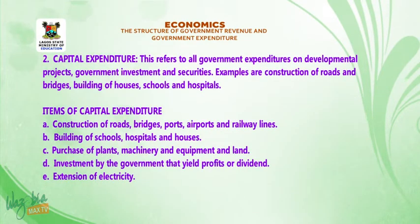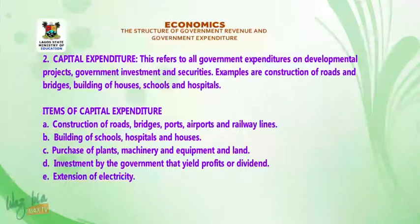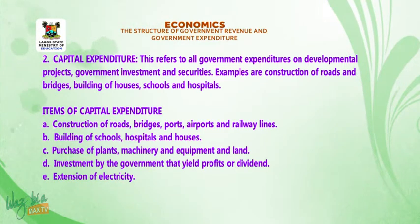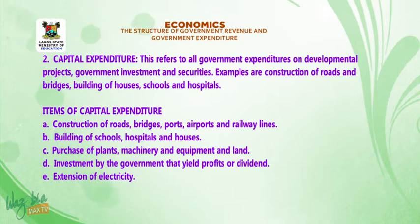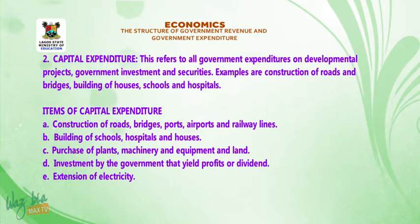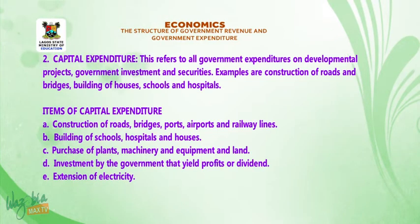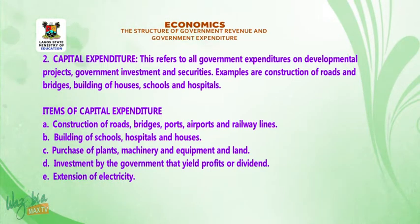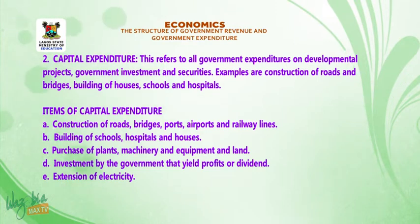Capital expenditure refers to all government expenditure on developmental projects, government investment and securities. Examples include construction of roads and bridges, and building of houses, schools and hospitals. Items of capital expenditure: 1. Construction of roads, bridges, ports, airports and railway lines. 2. Building of schools, hospitals and houses. 3. Purchase of plants, machineries, equipment and land. 4. Investment by the government that yields profits or dividends. 5. Extension of electricity.